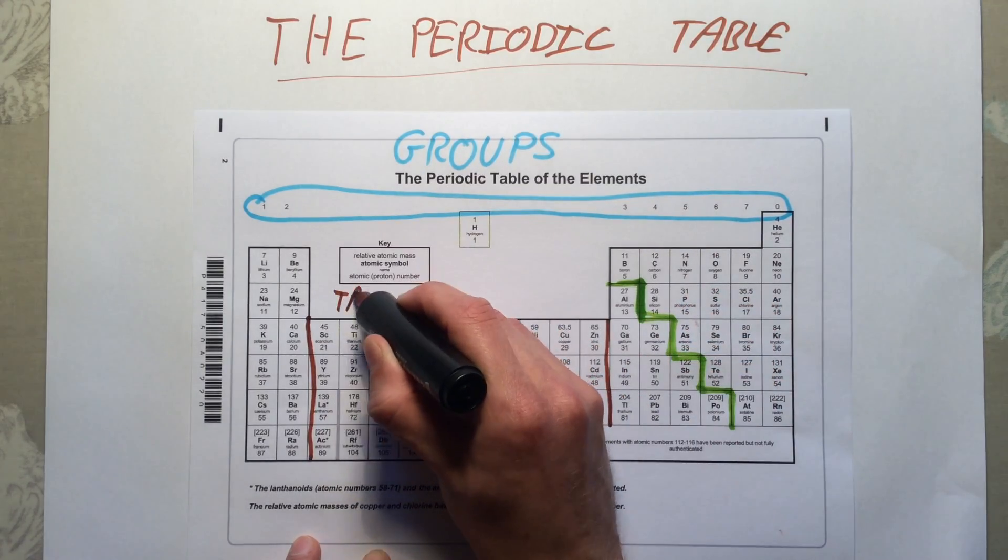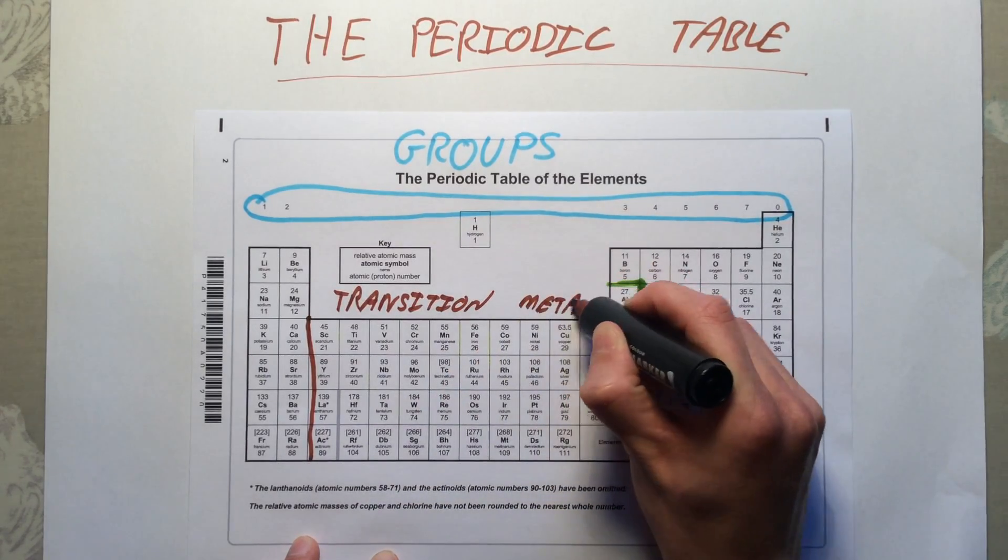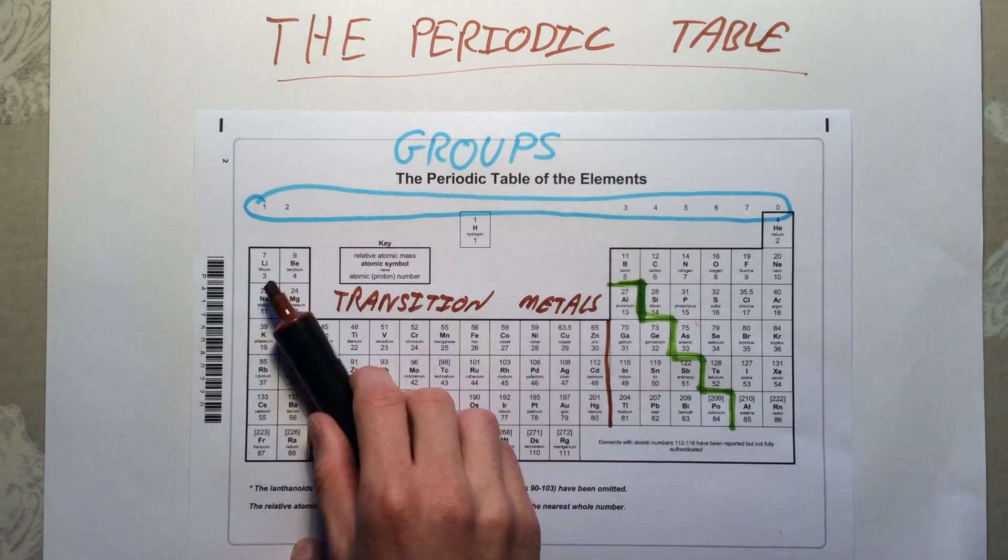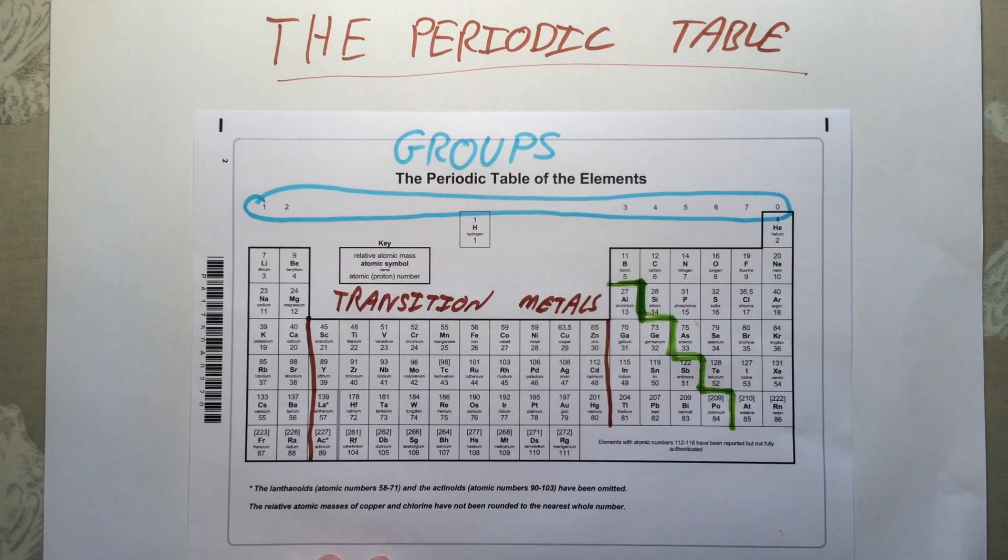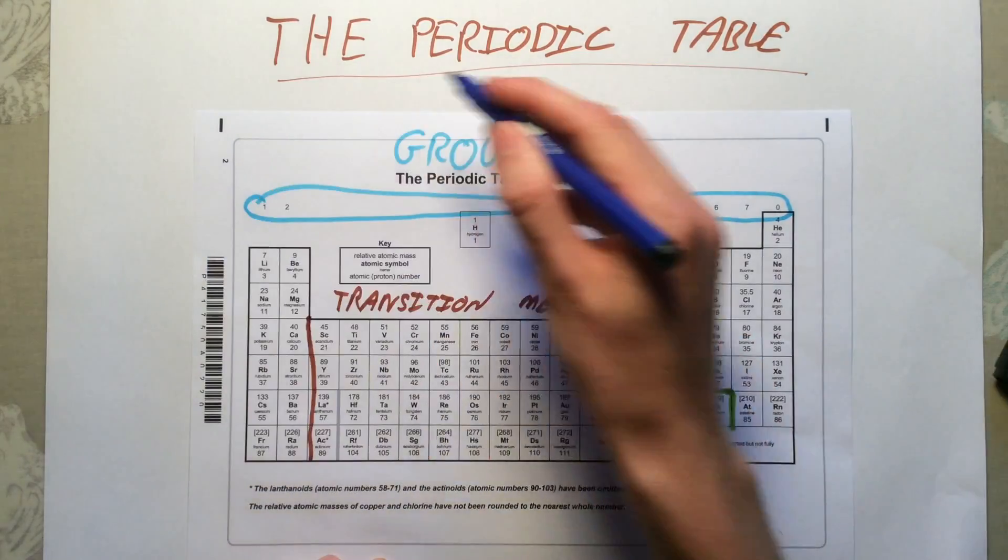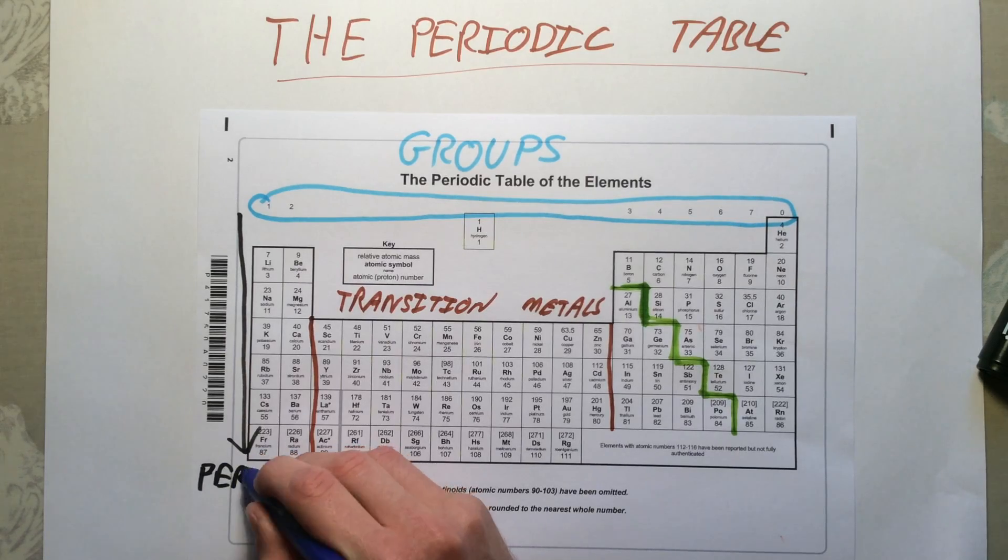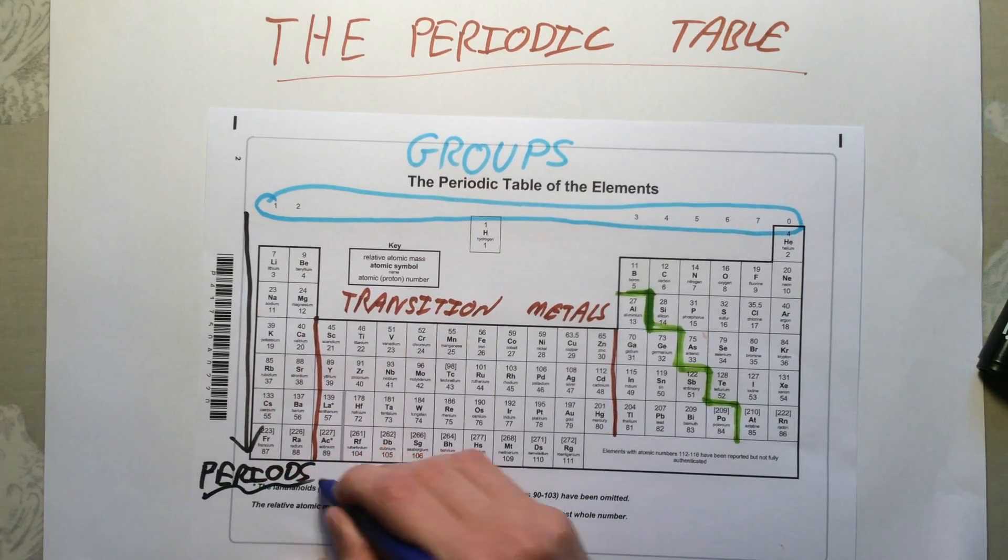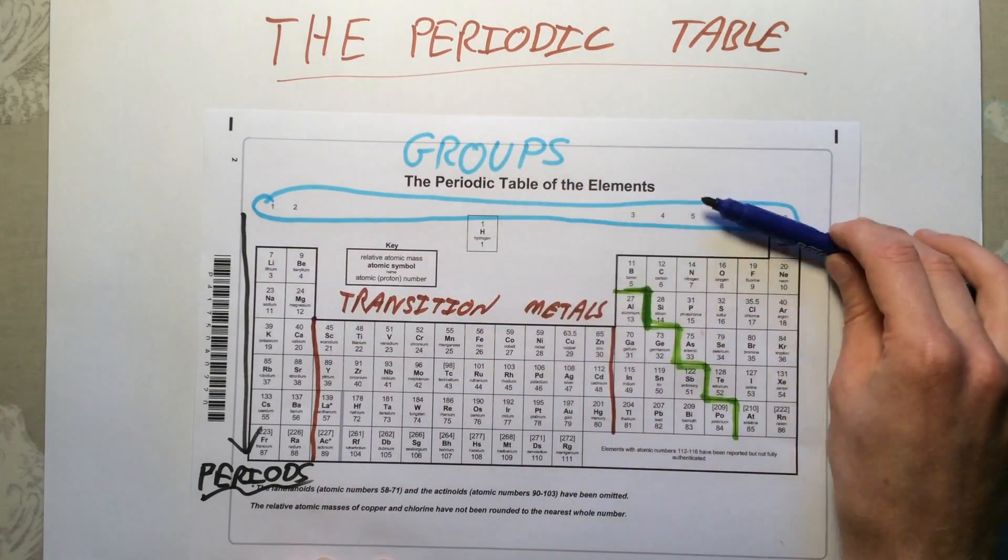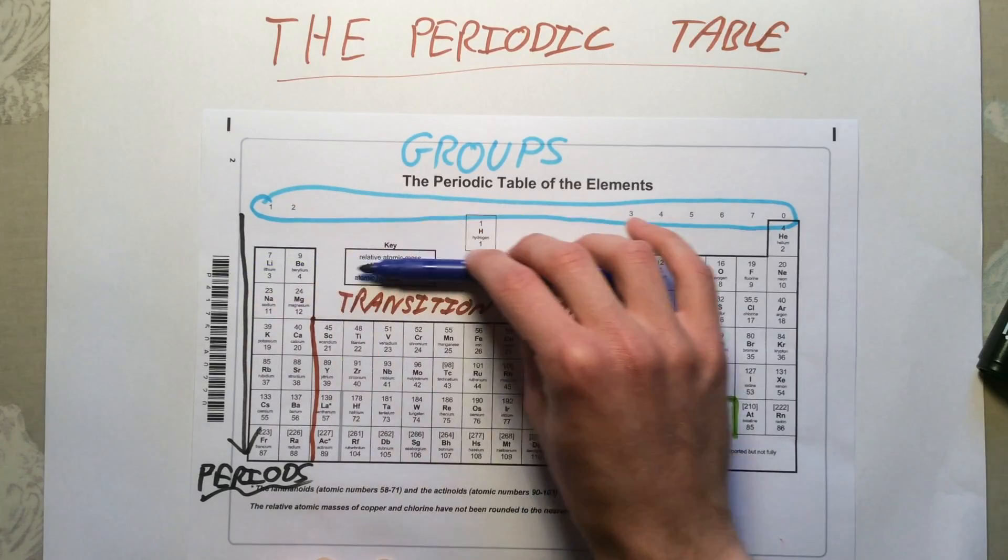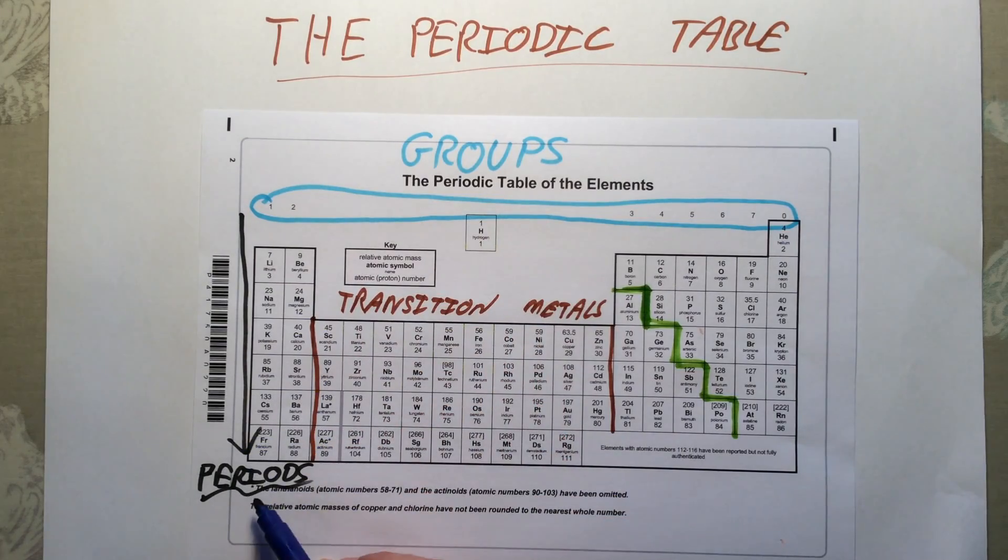Later on the course we will speak about this special section here. Just for the time being, we need to know these are called the transition metals. That kind of makes sense because the transition is like a gap, and we have a gap or a big jump from group two over to group three. Now down the side we have our periods. So the rows of the periodic table we call the period. At the top here with hydrogen and helium in it, we have period one. Then lithium starts period two, all the way along to neon. Period three starts with sodium. Period four, five, six, seven.